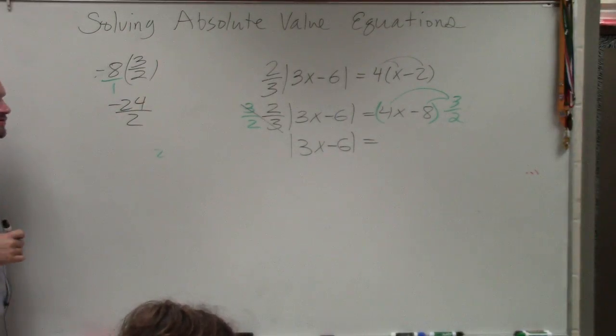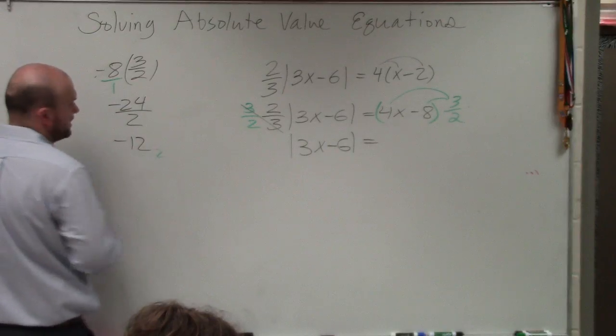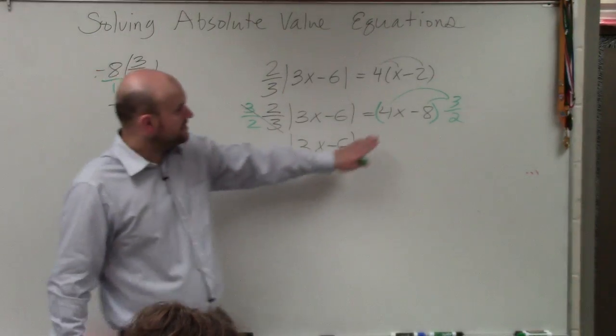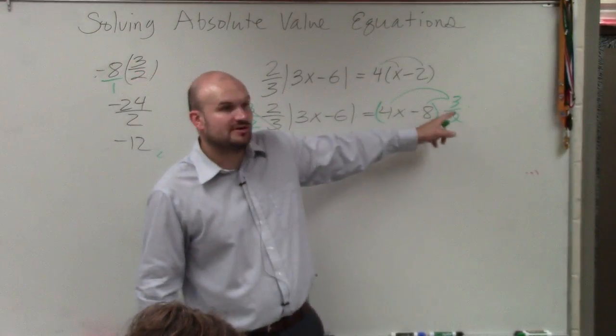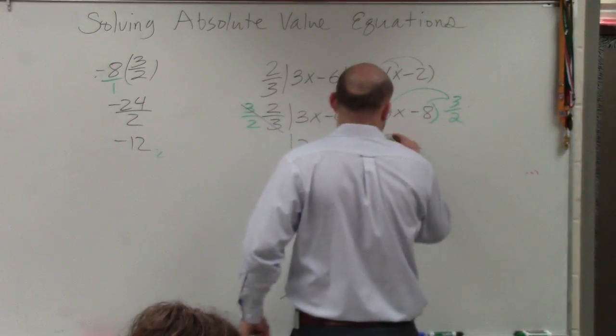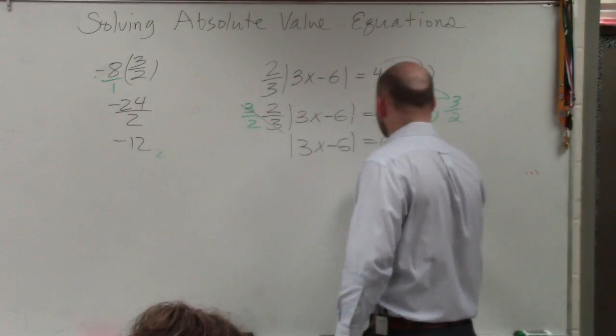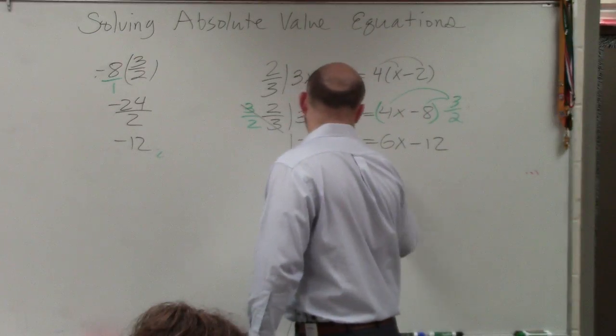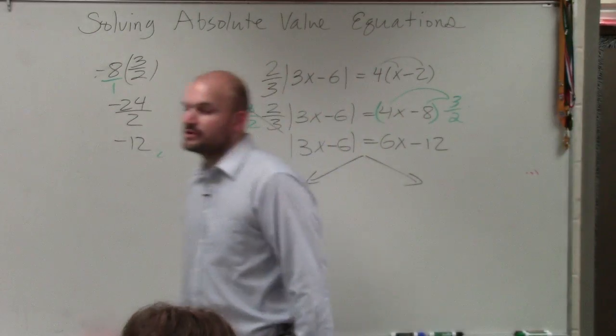Cross multiplication is something that is totally different. So you have a negative 24 divided by 2, which is a negative 12. If you do the same thing for this one, you'd have 4 times 3, which is 12, divided by 2, which gives you 6. So you have 6x minus 12. OK? So now we're done with step one.